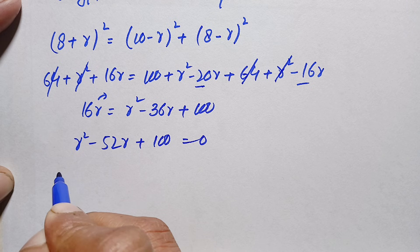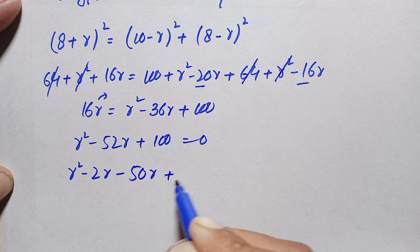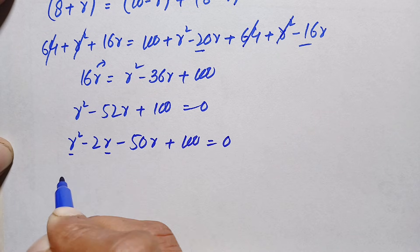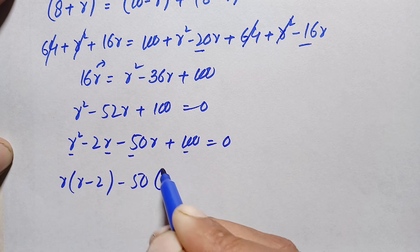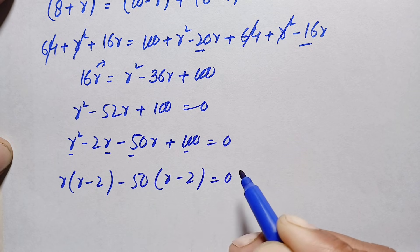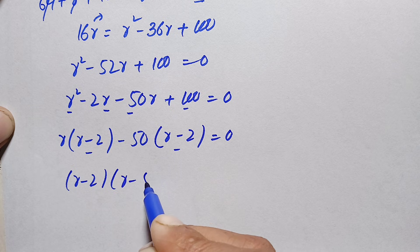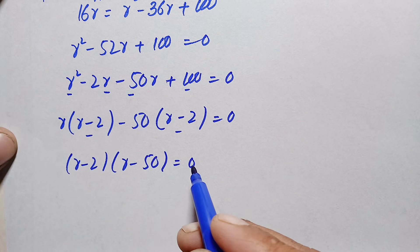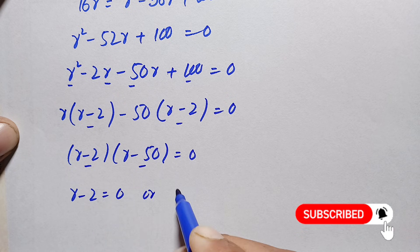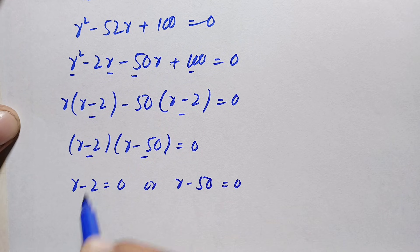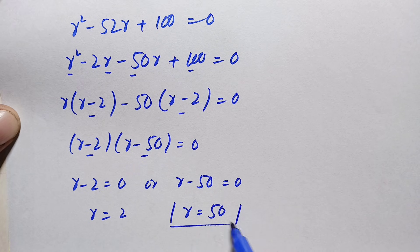We solve this quadratic equation by factorization. We rewrite it as r squared minus 2r minus 50r plus 100 equals 0. Taking r common from the first two terms gives r(r minus 2), and taking negative 50 common from the last two terms gives minus 50(r minus 2) equals 0. Since (r minus 2) is common, we get (r minus 2)(r minus 50) equals 0. Therefore r equals 2 or r equals 50.